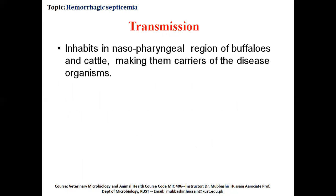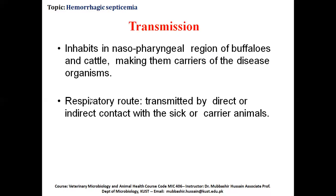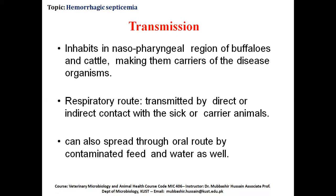Now we come to transmission. This bacteria inhabits the nasopharyngeal region of buffaloes and cattle, making them carriers of the disease organism — Pasteurella multocida. The main route of transmission is the respiratory route, through inhalation or by direct or indirect contact with sick or carrier animals. The disease can also spread through ingestion — the oral route — by ingestion of contaminated feed and material.